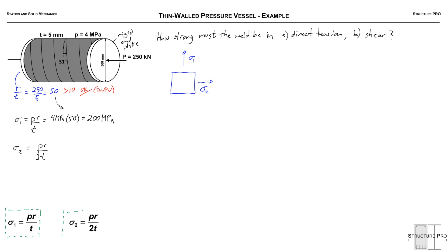Okay then sigma 2. A little bit trickier here. We know we have the PR over 2t but there's this extra term here right? We have the load which is acting in this direction and just to make it easy on ourselves, we'll write it out. So it's going to be PR over 2t minus P over A, the area of the thin-walled pressure vessel wall.